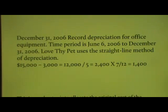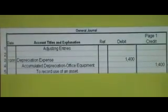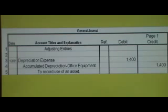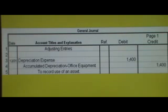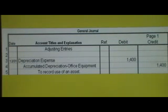Since the asset was not owned for the entire year but only seven months out of the year, you multiply by seven and divide by twelve to get a depreciation cost of one thousand four hundred for the first year. The journal entry to record this is a debit to depreciation expense of one thousand four hundred and a credit to accumulated depreciation — office equipment — one thousand four hundred.